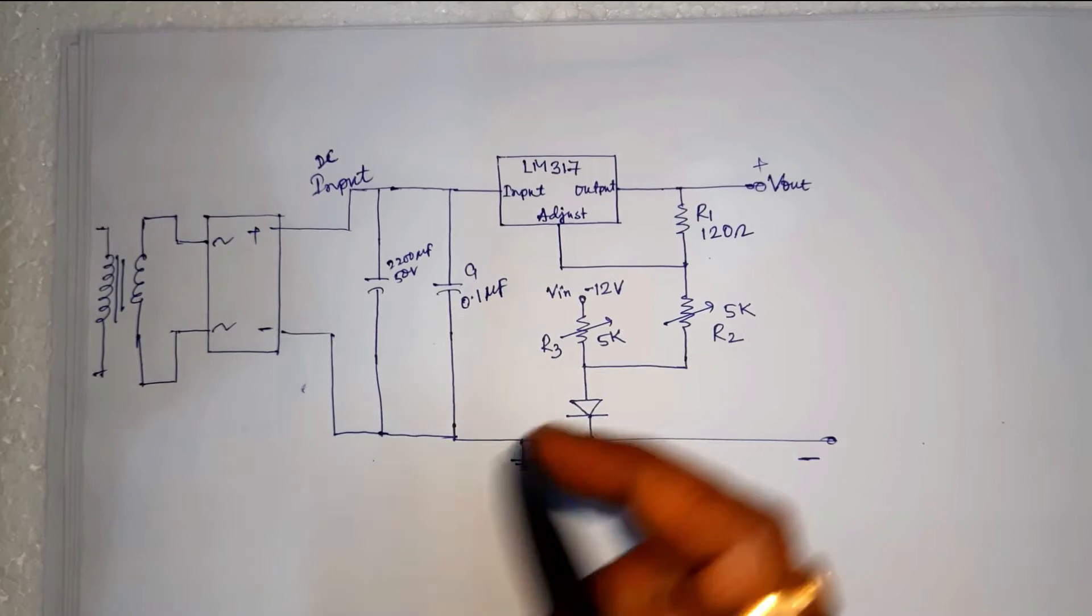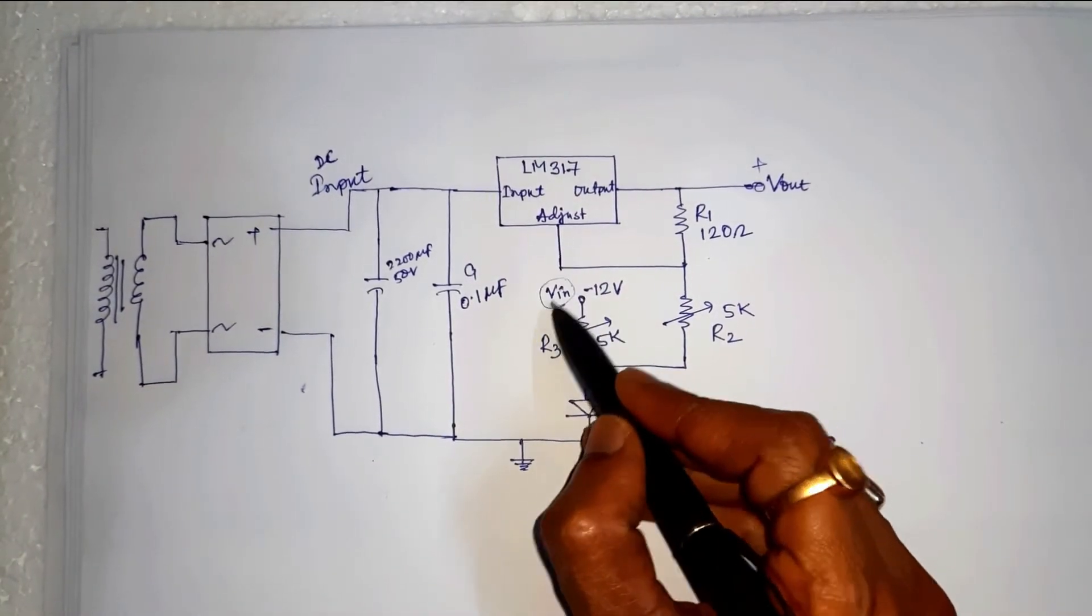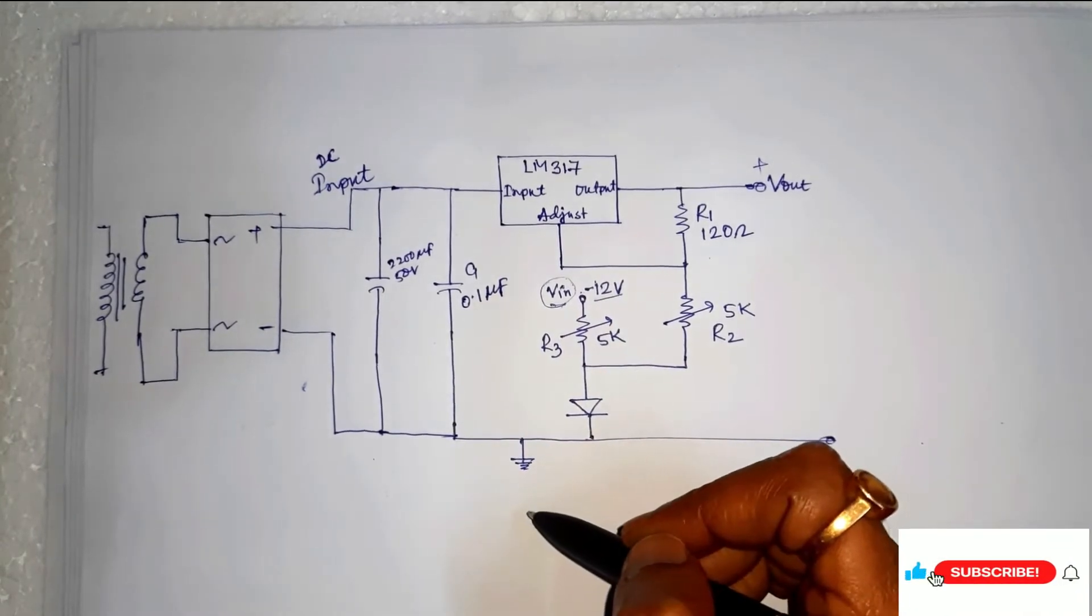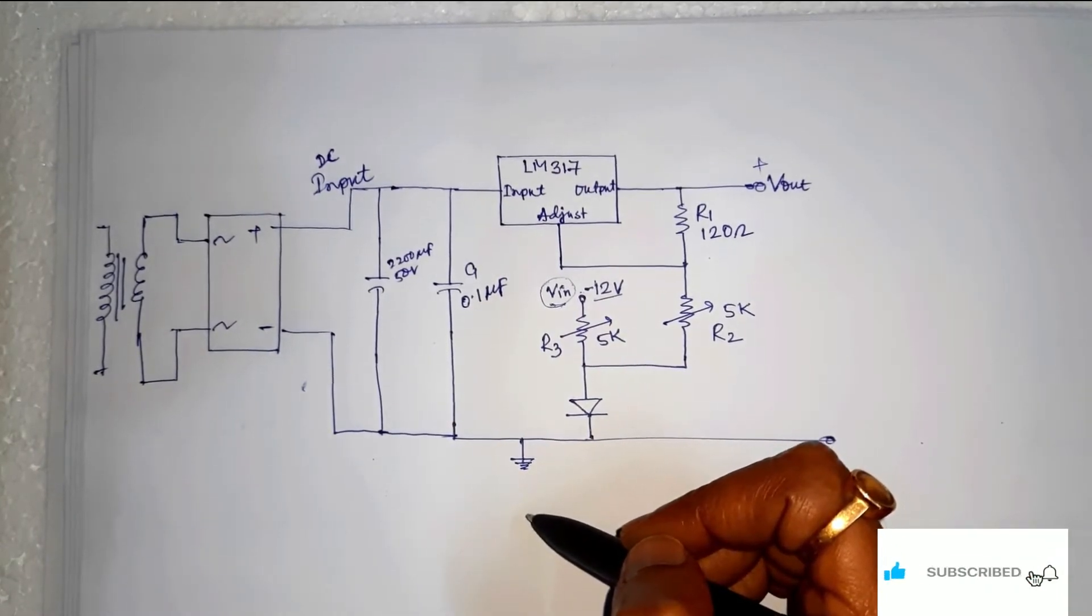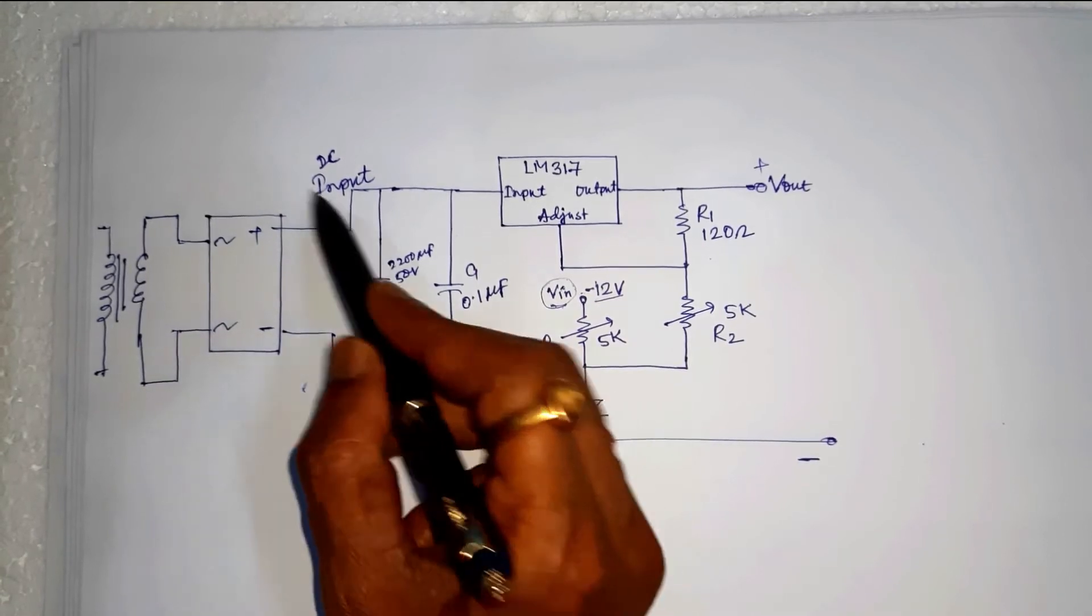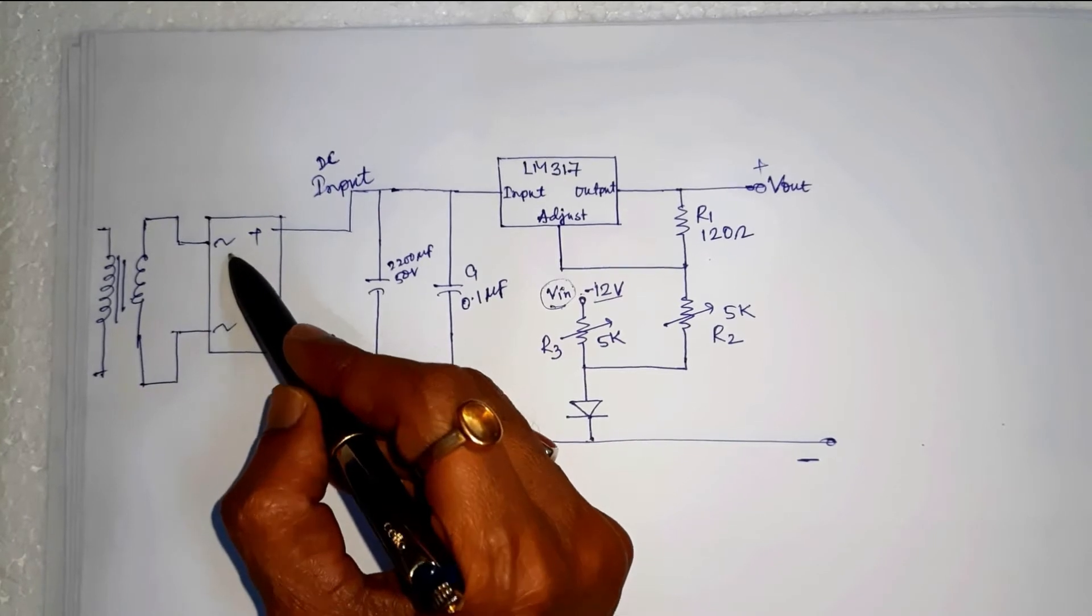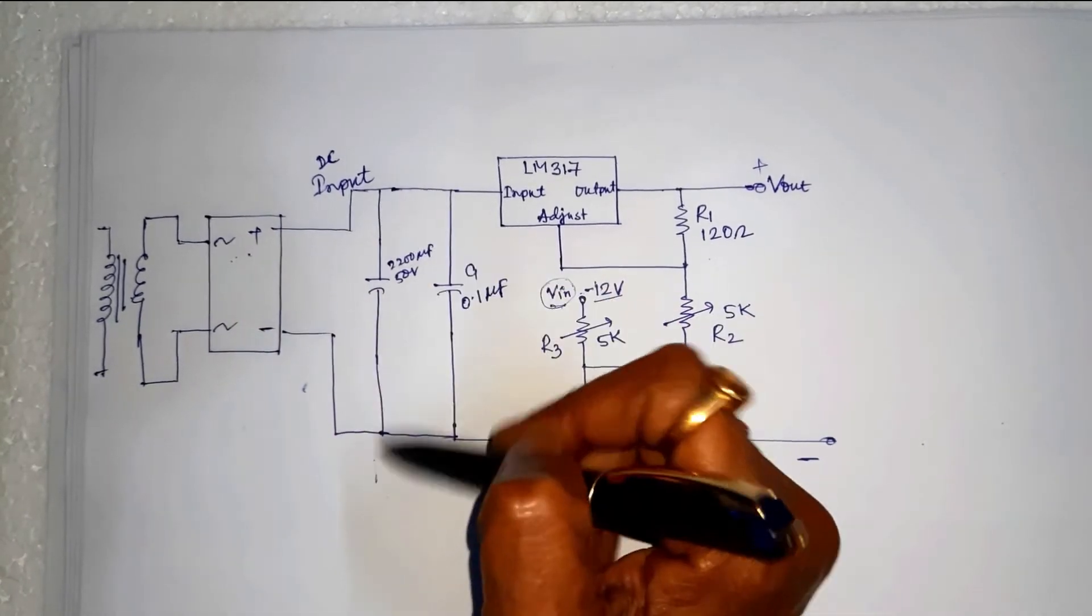Here, we apply input voltage V-in is minus 12 volt. And this is the common circuit, the transformer, the rectifier circuit, and filter circuit.